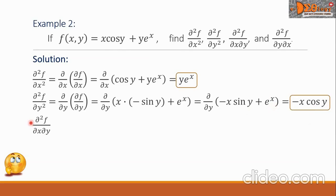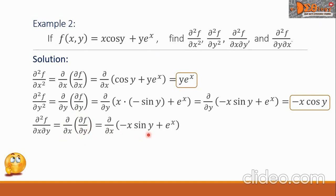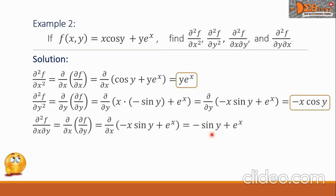We have now the second order partial derivative of f, dx dy. This means we take the partial derivative with respect to x of the partial derivative of f with respect to y. The partial derivative of f with respect to y is negative x sine y plus eˣ — copied from our previous solution. Now taking the partial derivative with respect to x: the derivative of negative x sine y is negative sine y, plus the derivative of eˣ is eˣ. This is the final answer.